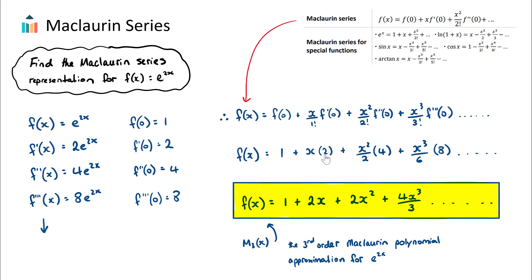Then we have plus, we have x squared over 2 factorial, multiplied by the second derivative of f when x is 0. That's just simply x squared over 2 times our 4 here. And then plus x cubed over 3 factorial, multiplied by the third derivative of f when x is 0. That's just going to be x cubed over 6 times 8. And this would just continue on here.